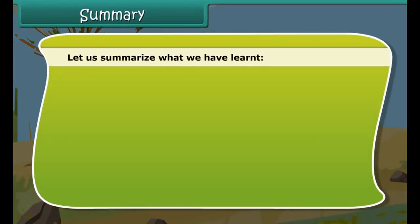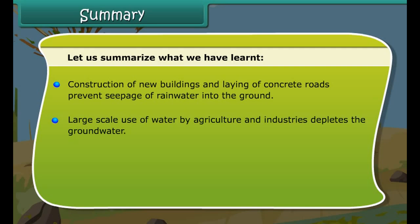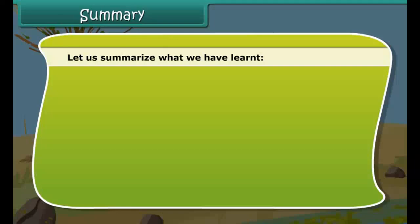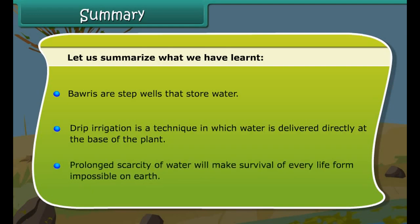In summary: Construction of new buildings and laying of concrete roads prevents seepage of rain water into the ground. Large-scale use of water by agriculture and industries depletes ground water. The distribution of water across the earth is quite uneven. Rainwater harvesting is the method of collecting, storing and conserving rain water. Bavaris are step wells that store water. Drip irrigation delivers water directly at the base of the plant. Prolonged scarcity of water will make survival of every life form impossible on earth.